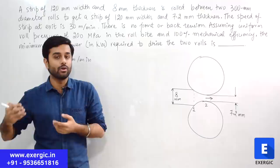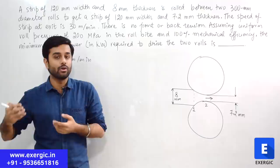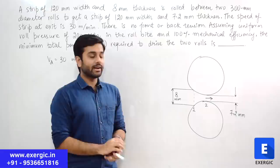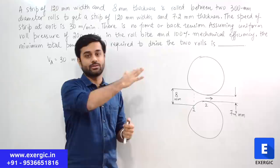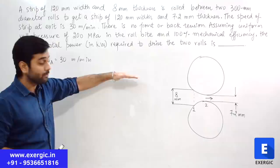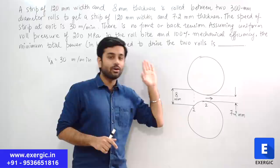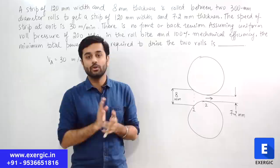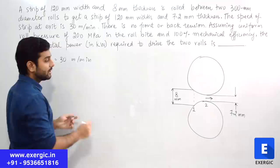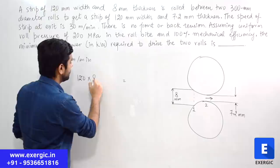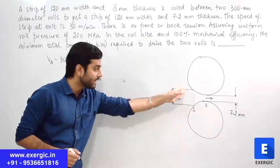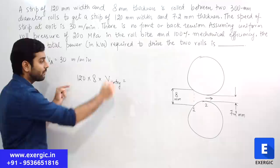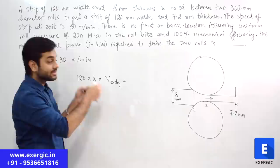What is the velocity at section 1 — should it be higher, lower, or the same? Using the concept of constant volume, the velocity at section 1 should be lesser than the velocity at section 2. You can equate the volumes flowing through the rolls per unit time. At the entry: width × thickness × velocity at entry equals the volume per unit time.